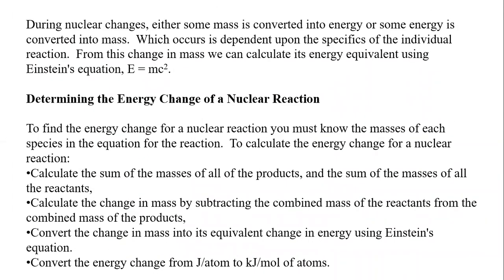How does nuclear reaction energy calculate? During nuclear changes, either some mass is converted into energy or some energy is converted into mass, which occurs depending upon the specifics of the individual reaction. From this change in mass, we can calculate its energy equivalent using Einstein's equation: E equals mc squared. Energy and mass are converted into each other through this famous equation.